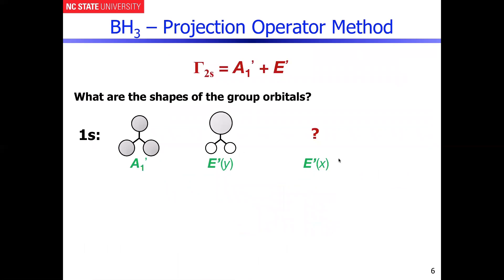Let's continue this process on the next page and remember where we were. We have the symmetries of the group orbitals have to be A1 prime plus E prime. We determined what the shape of A1 prime is earlier in part two. We just completed what E prime Y looks like. Now we have to figure out what the other degenerate group orbital will look like.